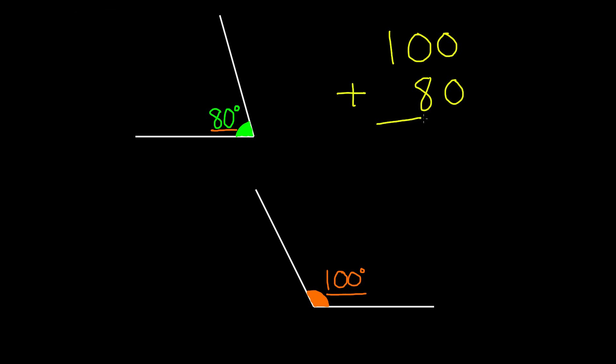we get 180 degrees. So these two angles when added up give you 180 degrees. So these two angles are supplementary angles.